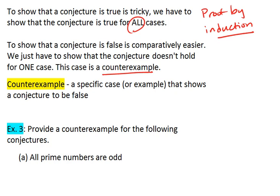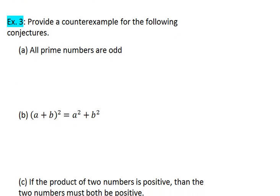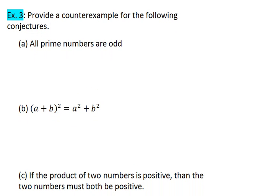The easiest way to show this is just to jump into another example. So for example 3, we want to provide a counterexample for the following conjectures. The first one is that all prime numbers are odd. Take a moment, pause the video, and see if you can think of a number that is prime and not odd.